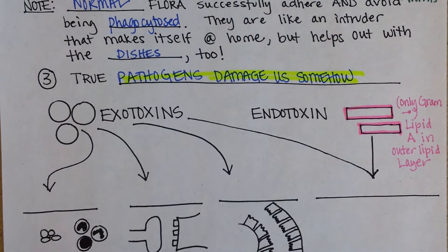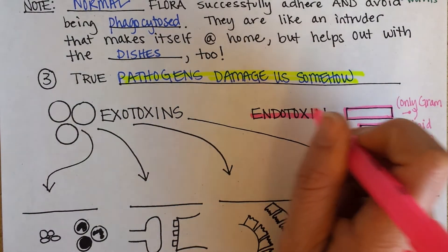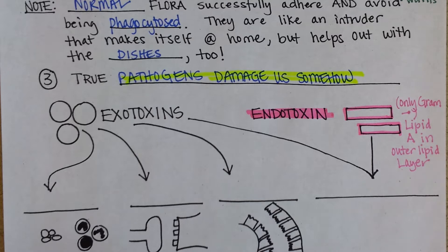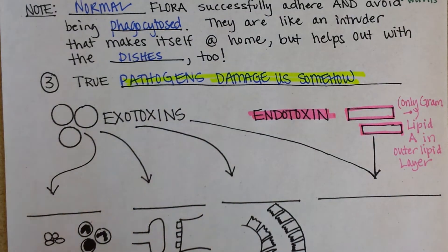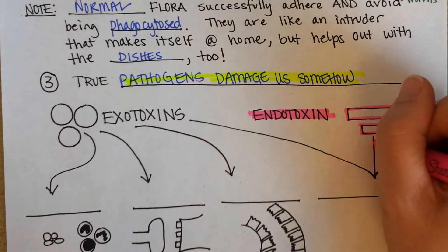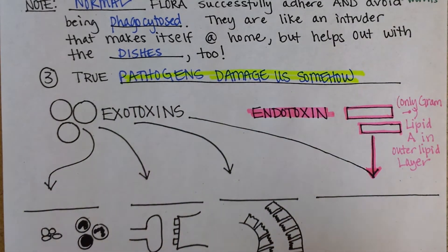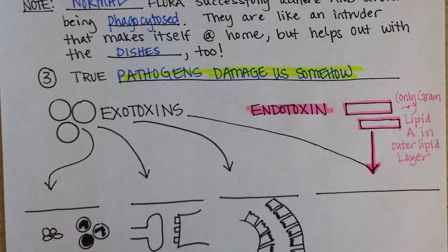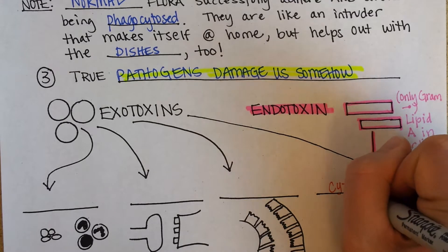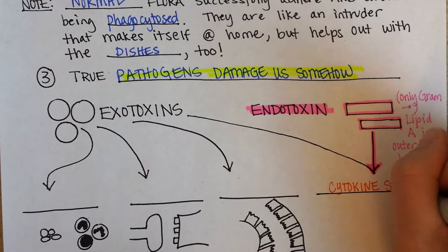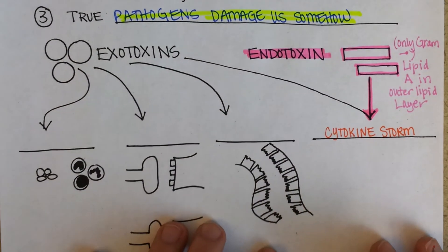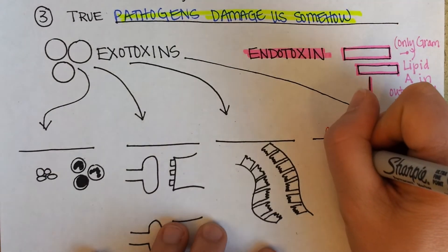We were talking about endotoxins. Endotoxins are part of the cell wall of gram-negative bacteria, and what they do to us is highly irritate our immune system and cause inflammation systemically. We have a fancy name for that — it's called the cytokine storm. Cytokines are little chemicals, and a storm would be a lot of them. Sure enough, there are a lot of these little chemicals that cause inflammation throughout your body.